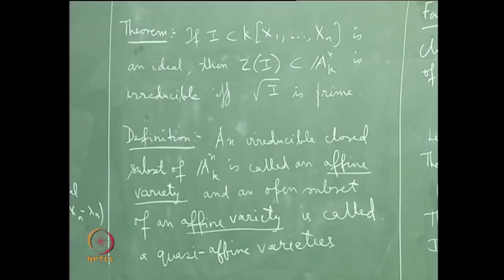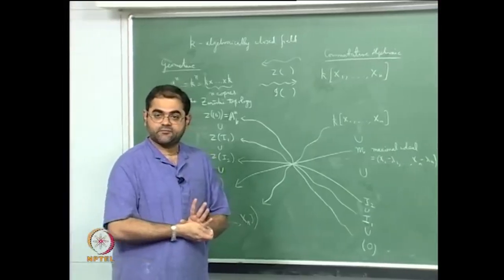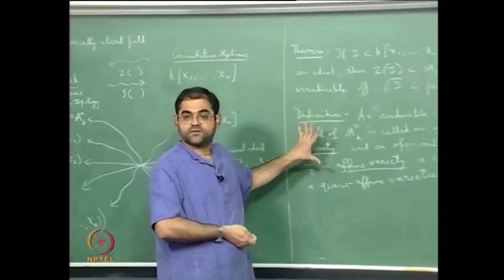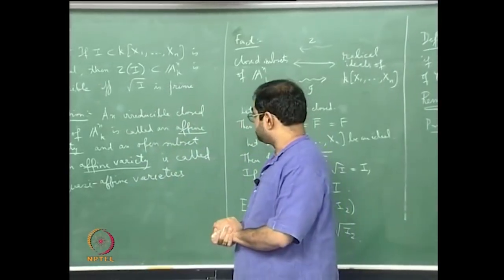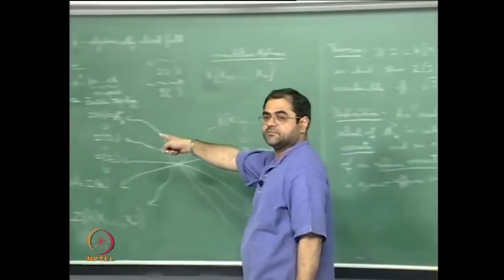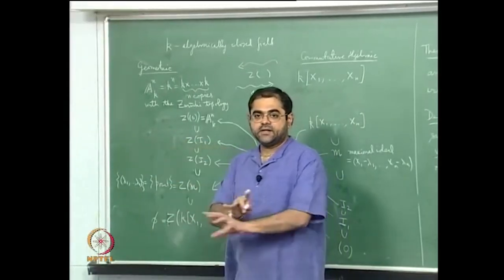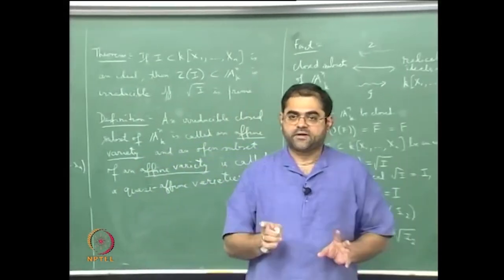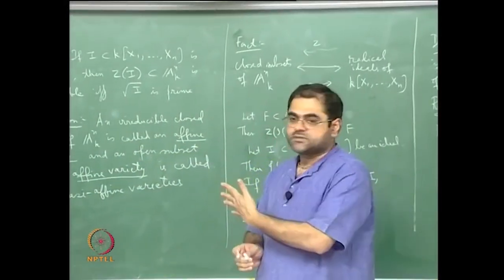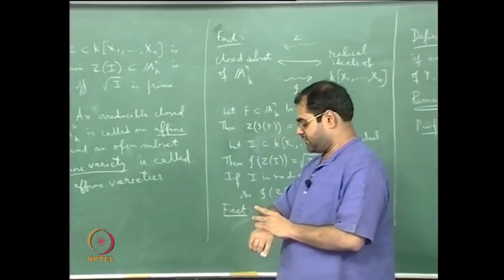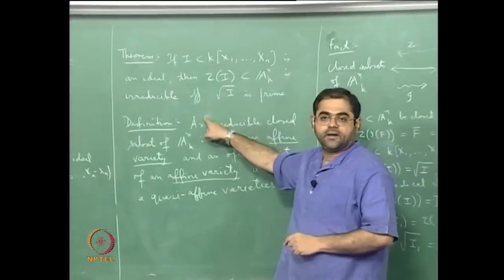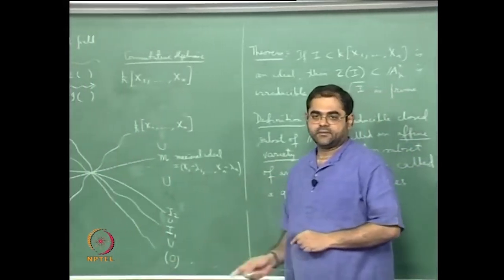Definition: an irreducible closed subset of A^n is called an affine variety, and an open subset of an affine variety is called a quasi-affine variety. The word 'quasi' is used whenever you take an open subset. The whole object of affine algebraic geometry is to study affine varieties and quasi-affine varieties. I will stop here and indicate the proofs in the next lecture.